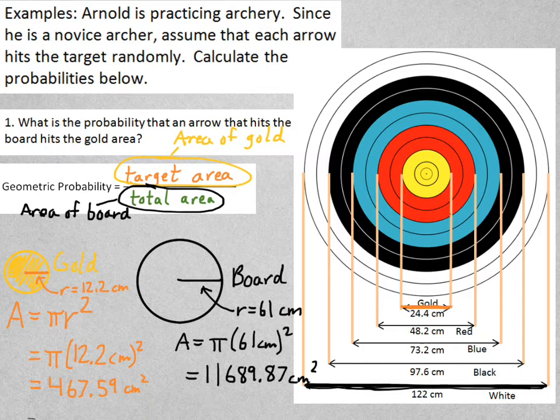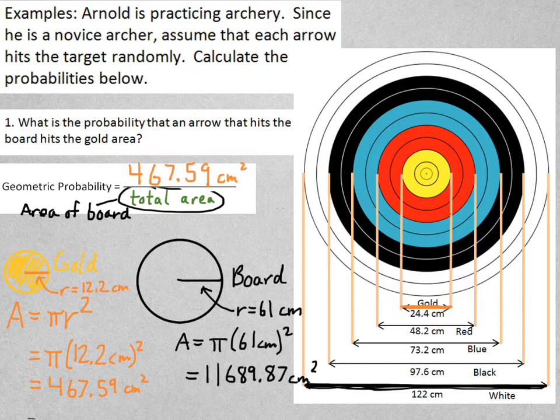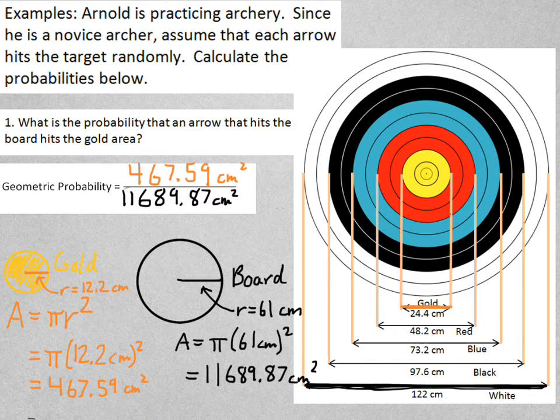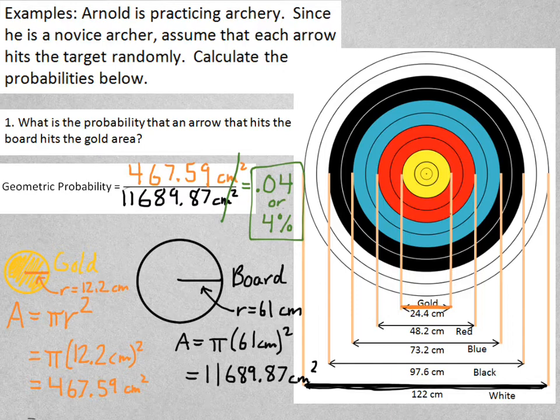Now that I have my two areas, then I can just put them into the formula. The target area is our 467.59. The total area was the 11,689.87. So I'll just divide the two. The calculator tells me it's .04. I used all of the decimal places, by the way. In other words, that's 4%. So the probability of him hitting the gold area, if he's randomly hitting a location on the target, is 4%. Notice that there's no units, because centimeters squared and centimeters squared cancel. That means that there are no units for the probability.